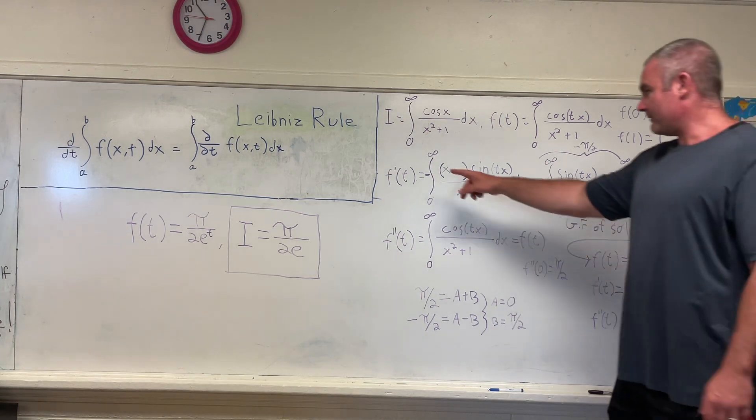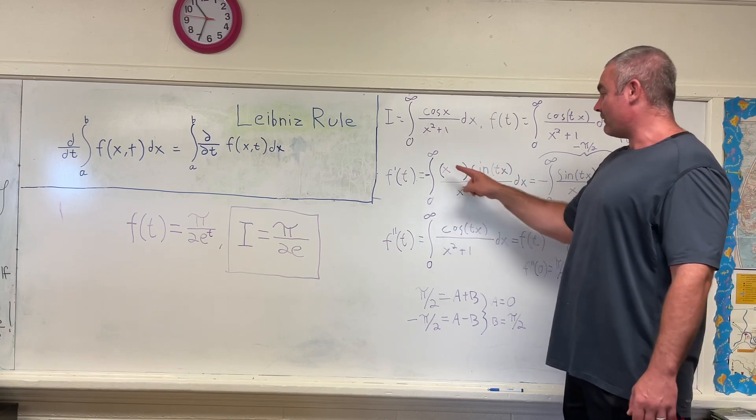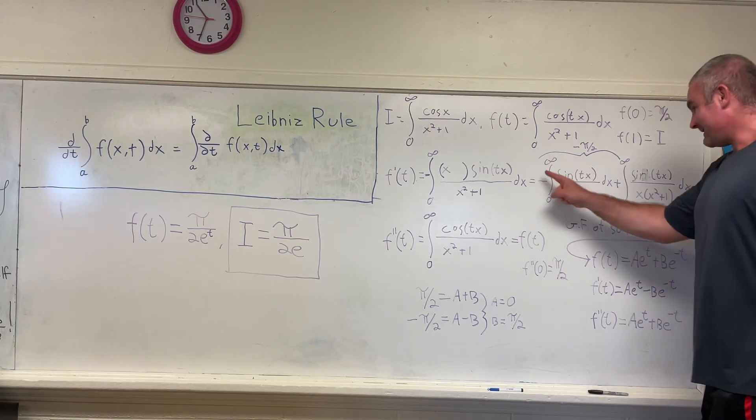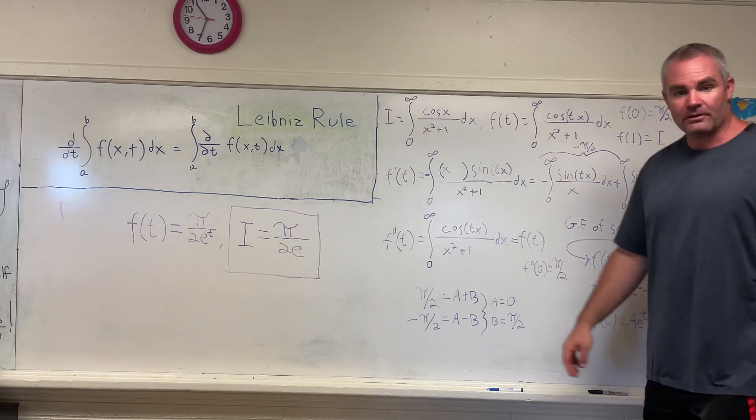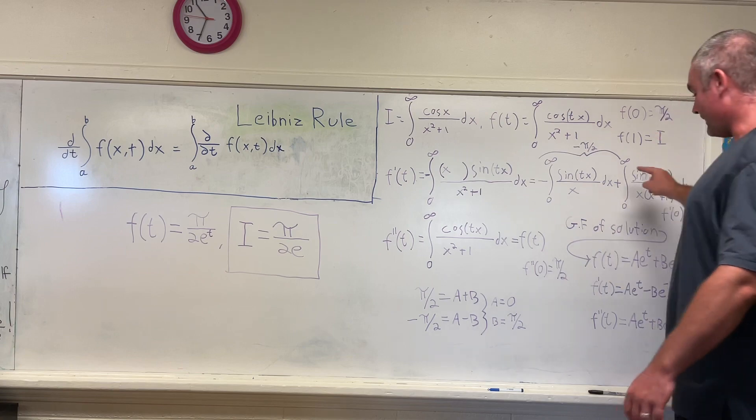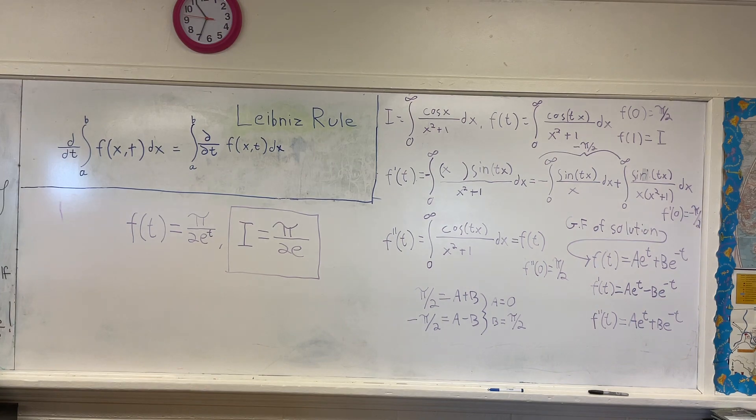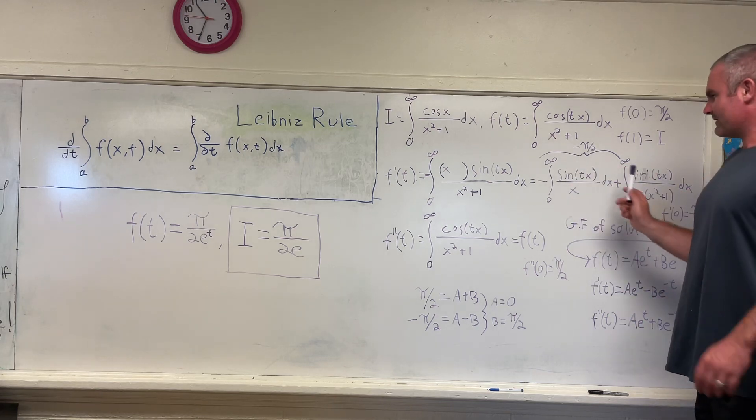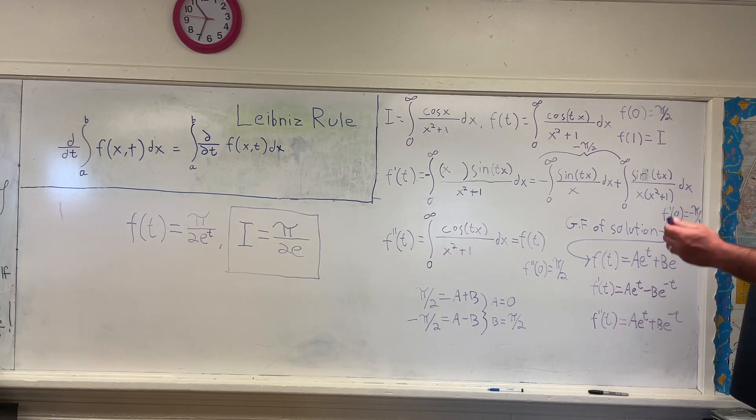So using the Leibniz rule, we get that f prime of t is equal to negative integral from 0 to infinity of x times sine tx over x squared plus 1 dx, which is equal to this. I'm going to show you the process for how I actually got from here to there.